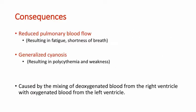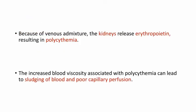Let's see what are the consequences. One is the reduced pulmonary blood flow leading to fatigue and shortness of breath. Second is generalized cyanosis resulting in polycythemia — that is, increased RBC production — and weakness. These are caused by mixing of deoxygenated blood and oxygenated blood. Because of the venous admixture, the kidneys release erythropoietin, resulting in polycythemia, and the increased blood viscosity associated with polycythemia can lead to sludging of blood and poor capillary perfusion.